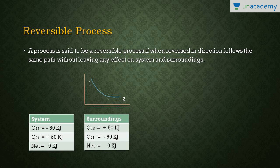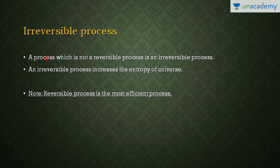An irreversible process is a process which is not reversible. An irreversible process increases the entropy of the universe — the entropy of the universe will always increase in an irreversible process. Keep in mind: the reversible process is the most efficient process. The most efficient cycle is the Carnot cycle, and all processes in the Carnot cycle are completely reversible processes.